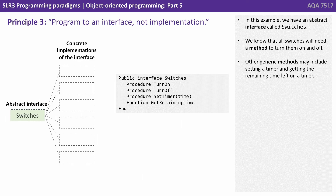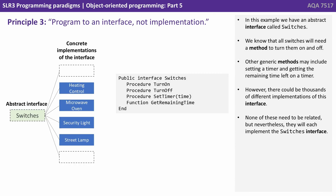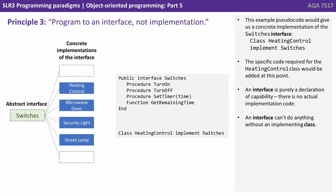In this example, we have an abstract interface called switches. We know that all switches will need a method to turn them on and off. Other generic methods may include setting a timer and getting the remaining time left on a timer. However, there could be thousands of different implementations of this interface. None of these need to be related, but nevertheless they will each implement the switches interface. This pseudocode gives us a concrete implementation of the switches interface, where the specific code required for the heating control class would be added. Remember, an interface is purely a declaration of capability — there's no actual code implemented there. An interface can't do anything without an implementing class.